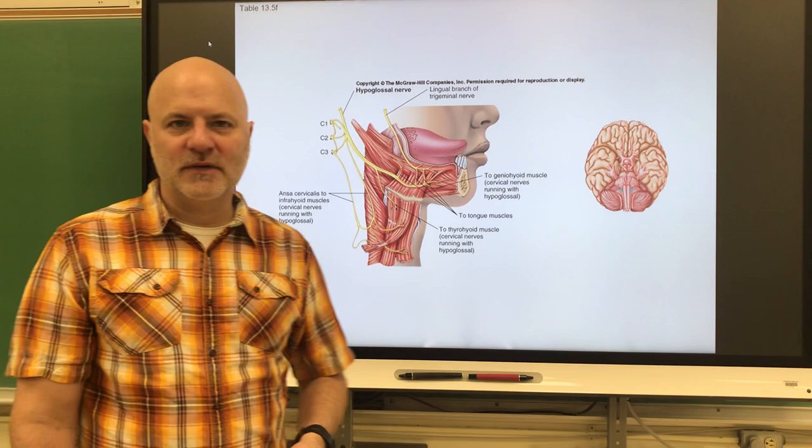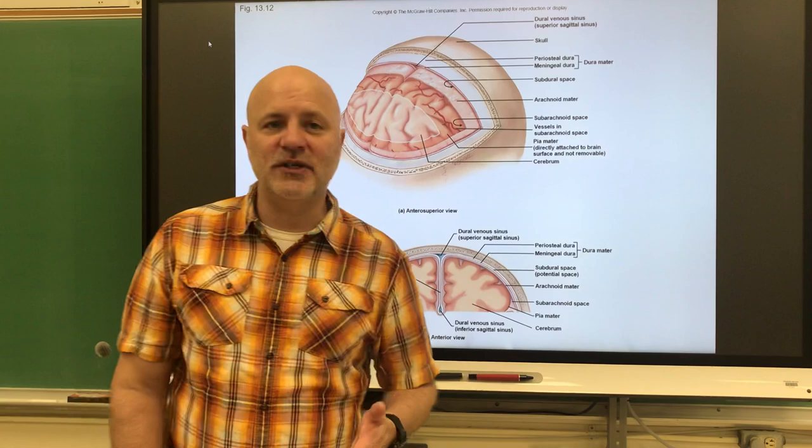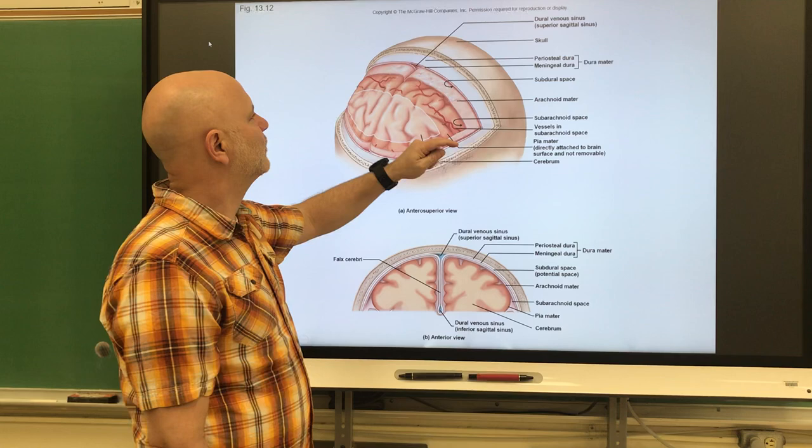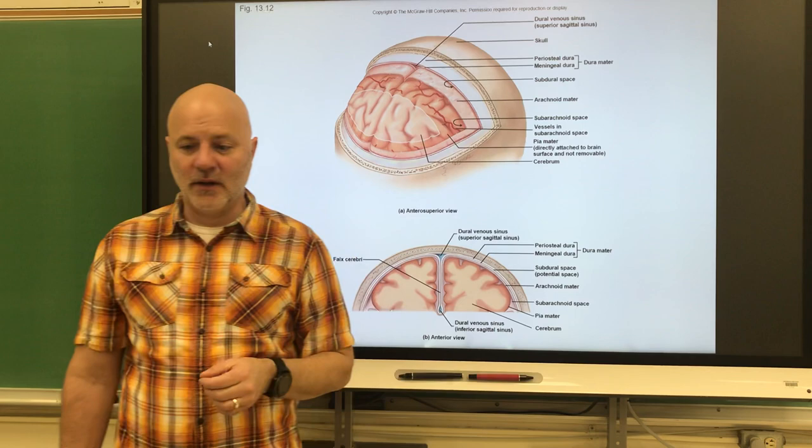The next part deals with the meninges, ventricles, and cerebrospinal fluid. The meninges were covered in Chapter 12 — they are the same on the brain as around the spinal cord: the dura mater, arachnoid mater, and pia mater, with the pia mater directly on the brain.